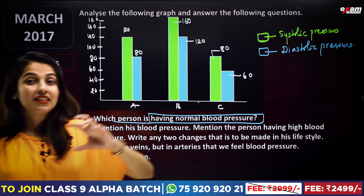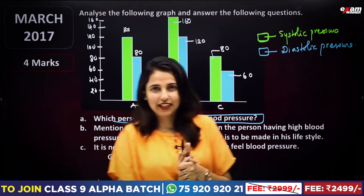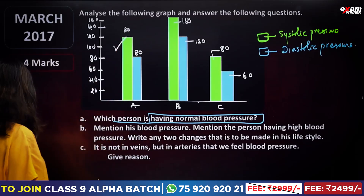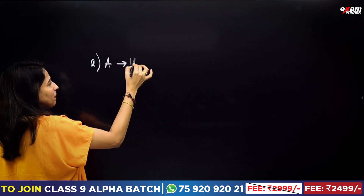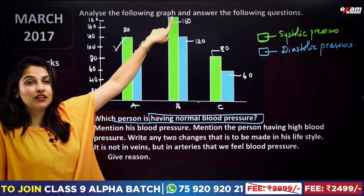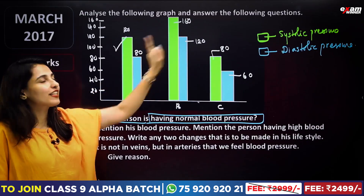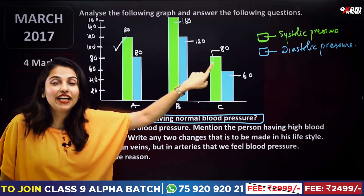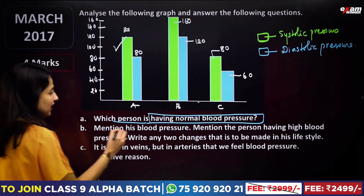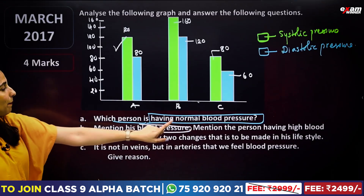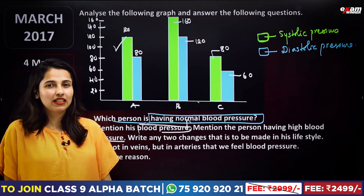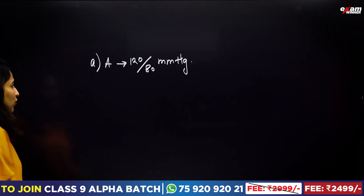In this case, we have a systolic blood pressure and diastolic blood pressure. The normal value — normal blood pressure — is 120 over 80 mmHg. So we call person A as having normal blood pressure.